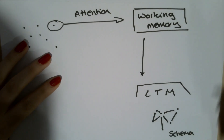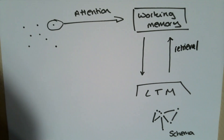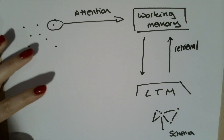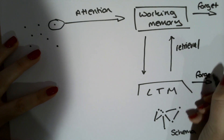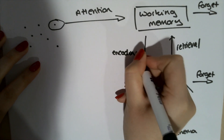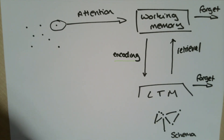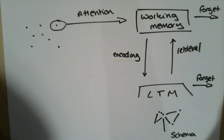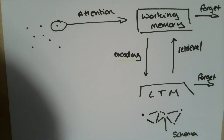The way that we use our information in long-term memory is that we need to retrieve it back into our working memory. That is why things like retrieval practice are a really important part of the learning process. At any point, from our working memory or our long-term memory, we could forget things. The better information is encoded into our long-term memory the easier it is to retrieve, because it is placed in our schema in a way that is related to things that we already know. So rather than being an isolated new piece of information, this new piece of information is connected to our existing schema, making it easier to retrieve.